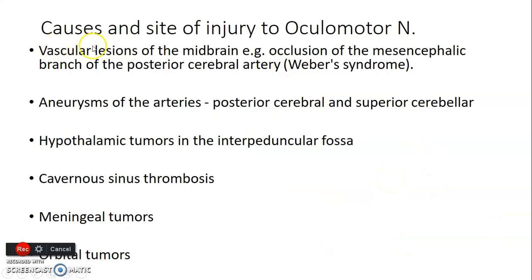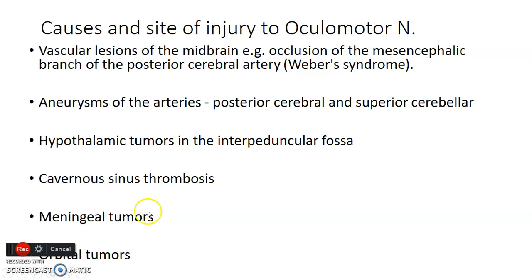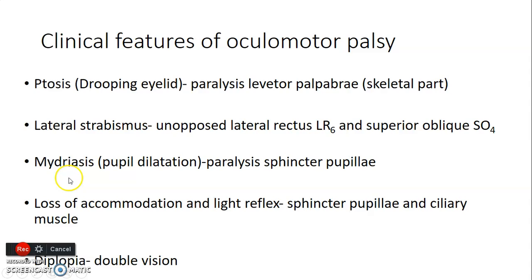Sites of injury to the oculomotor nerve include: diminished blood supply to the midbrain — for example, a clot in the mesencephalic branch of the posterior cerebral artery — as seen in Weber syndrome; aneurysm of the posterior cerebral and superior cerebellar arteries compressing the nerve; tumor of the hypothalamus extending into the interpeduncular fossa; thrombosis in the cavernous sinus; tumor of the meninges; and tumors within the orbit, as the nerve enters through the superior orbital fissure.